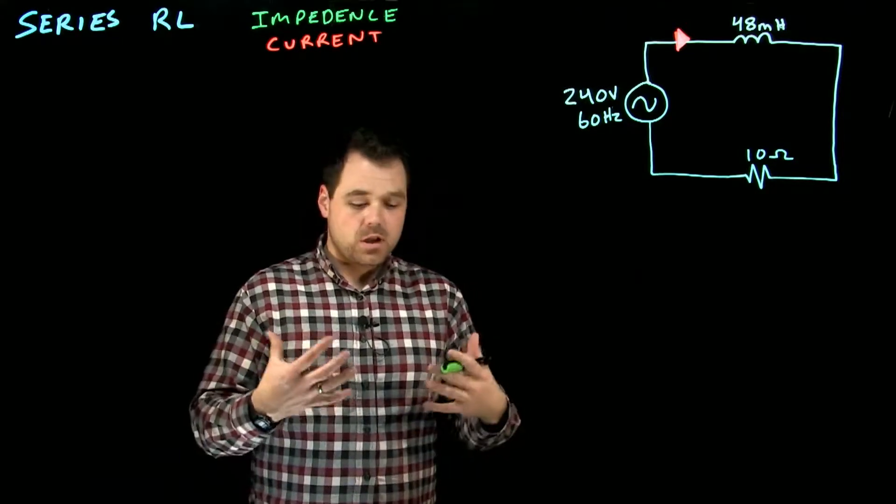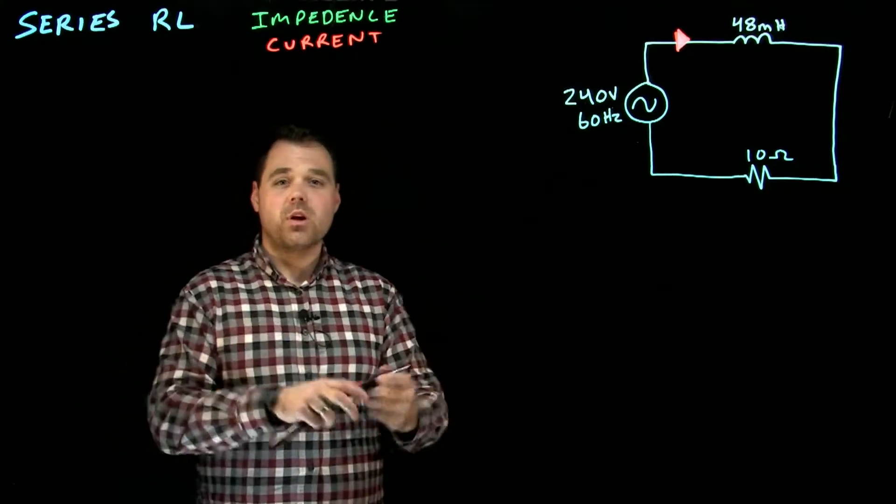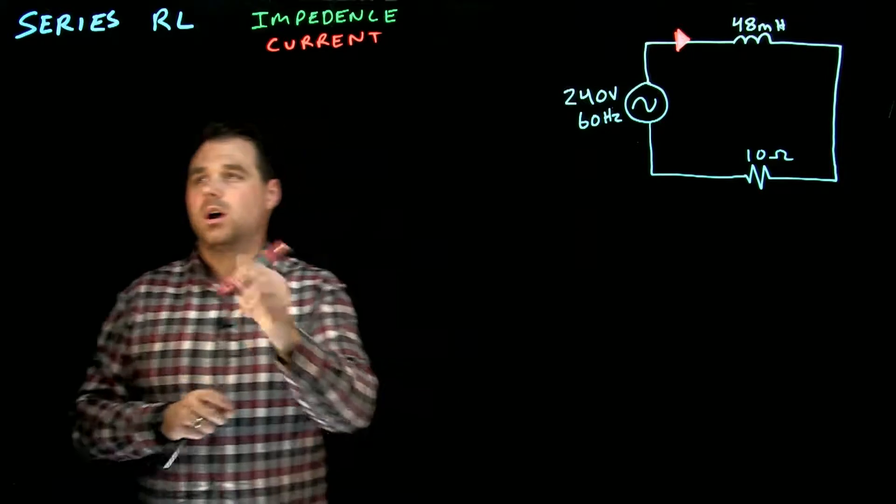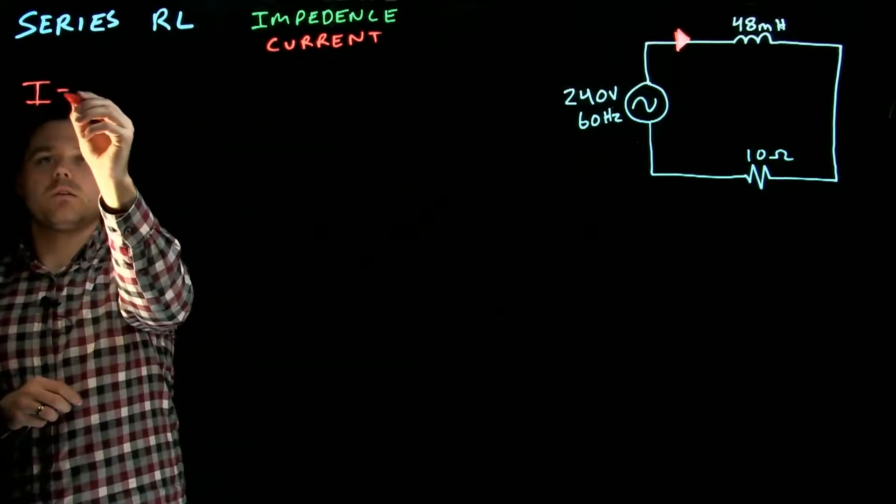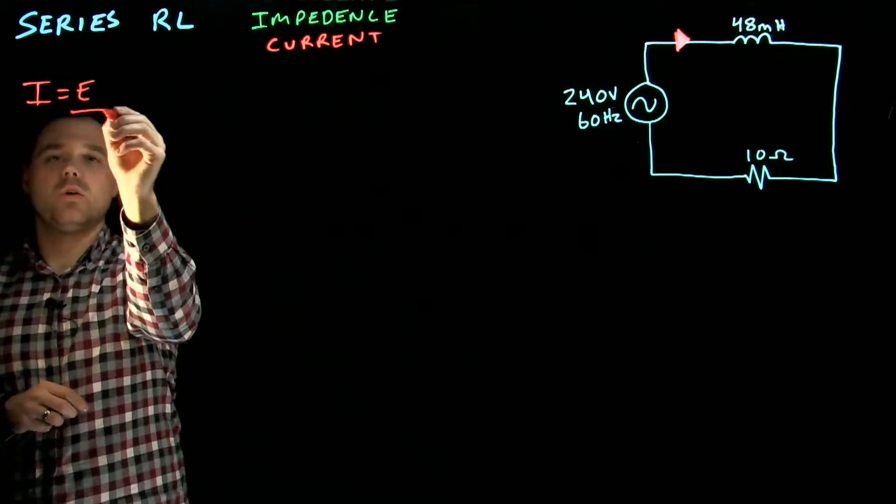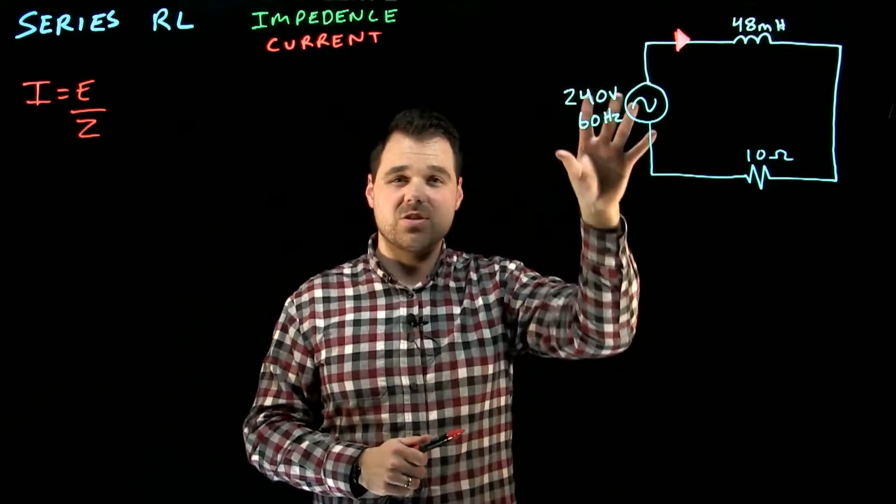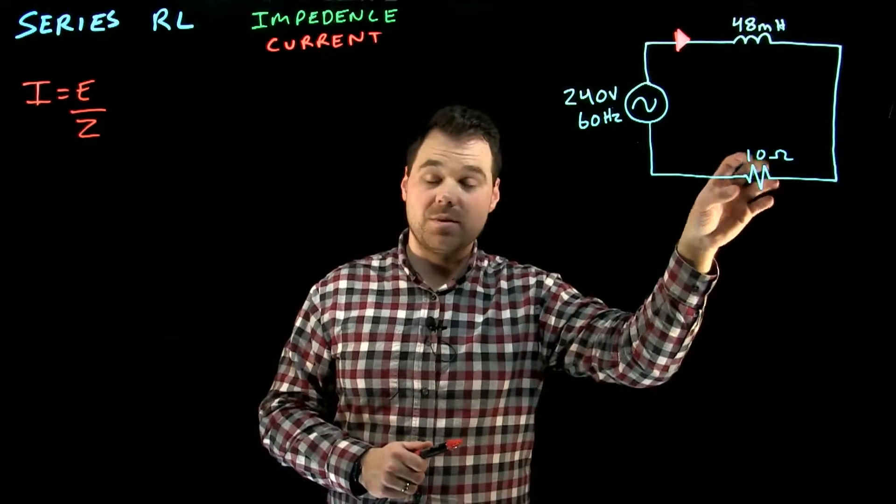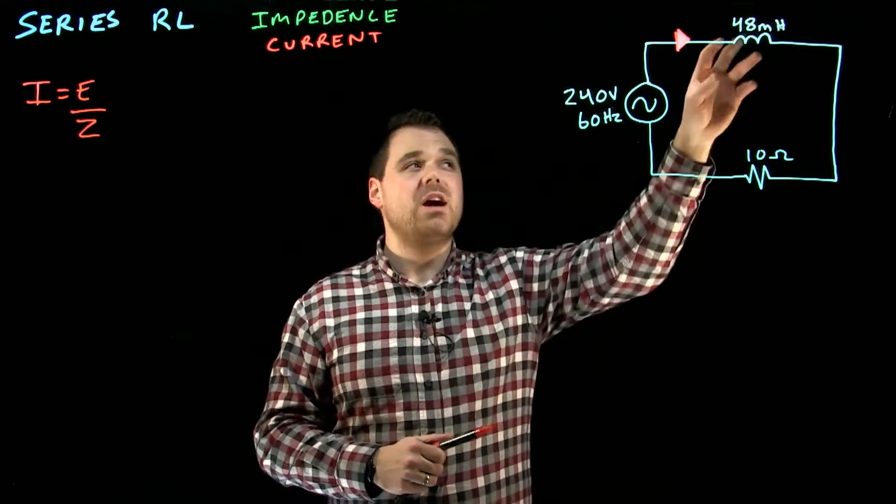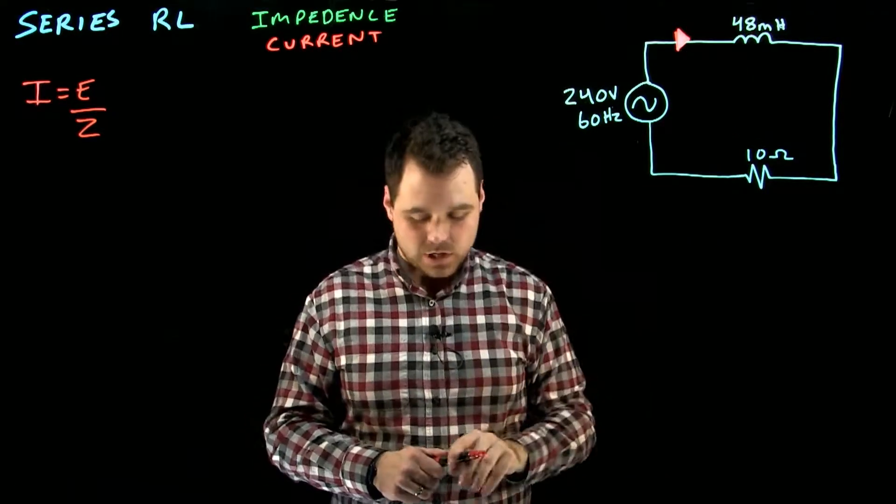So in this case, and like all cases, if we are looking for current, we are going to have to go I equals E over Z. And the reason I say Z is because we are dealing with that AC circuit. We know we have resistance and we know because it's AC, we are going to have inductive reactants due to the inductance.